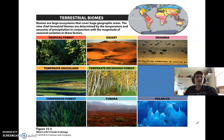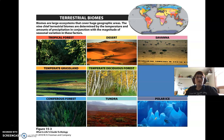The last terrestrial biome is polar ice — the Arctic, like Greenland, and the Antarctic continent. Not a lot going on here: it's cold year-round and stays frozen. It's also considered a desert because precipitation is so low. There are no plants on polar ice, so photosynthesis happens out in the ocean under the ice — that's where the food comes from. Animals like penguins in Antarctica and seals get their food from off the polar ice. That wraps up terrestrial biomes; we'll pick up next lecture with more on ecosystems.